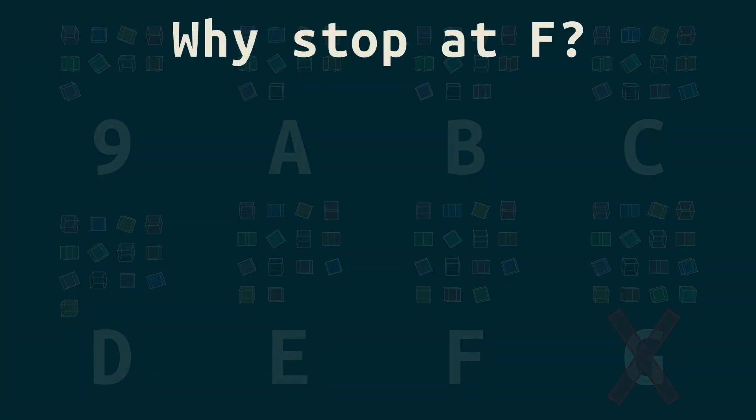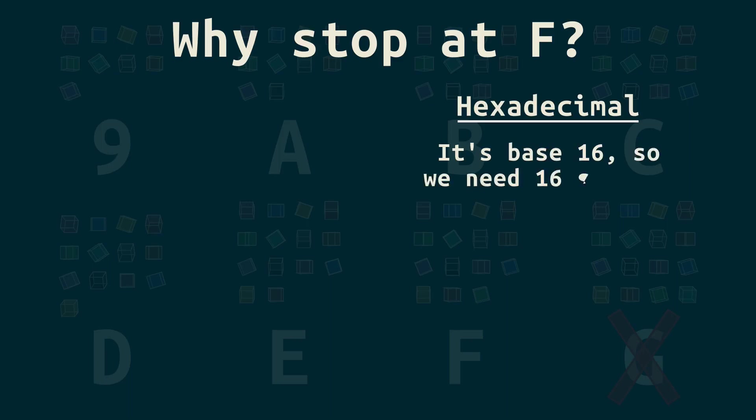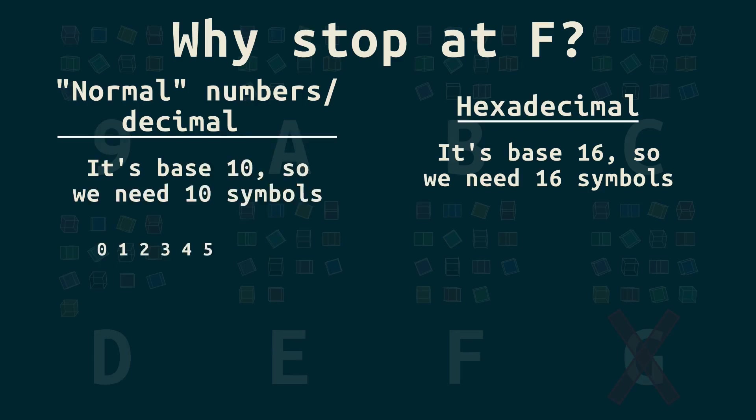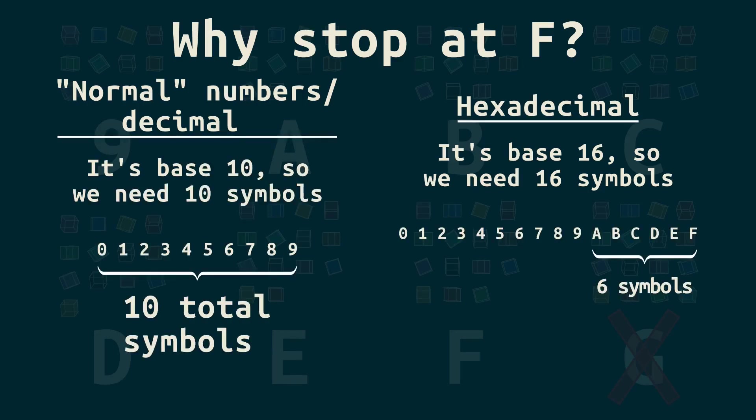Because we have enough different symbols now to make a base 16 number system, which is what hexadecimal is. Our normal numbers are called decimal, or base 10, and they've got 10 symbols, 0 to 9. The 6 symbols from A to F, plus the 0 to 9 we already have, give us 16 total.